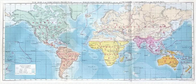Biogeography is the study of the distribution of species and ecosystems in geographic space and through geological time. Organisms and biological communities often vary in a regular fashion along geographic gradients of latitude, elevation, isolation and habitat area.